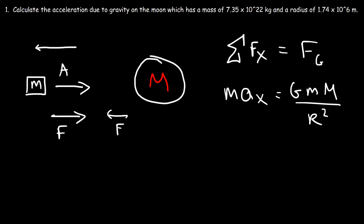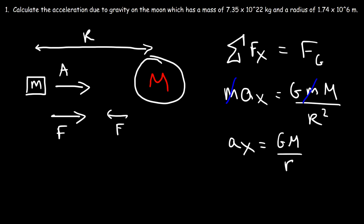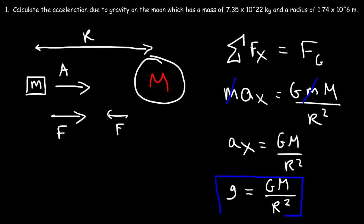R is the distance between the center of the object and the center of the moon. We can cancel the mass of the object on both sides, so the acceleration in the x-direction is G times M over R squared. The acceleration due to gravity — lowercase g — for any planet or moon is the universal gravitational constant times the mass of that planet divided by the square of the distance. This is the formula you need to calculate gravitational acceleration.